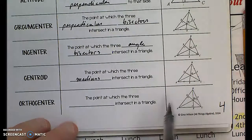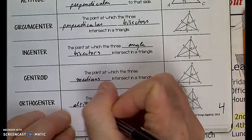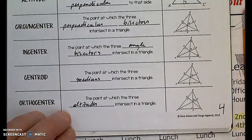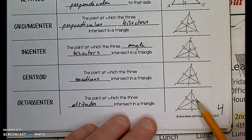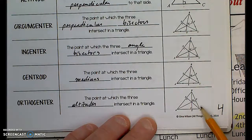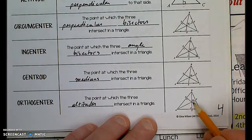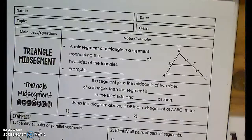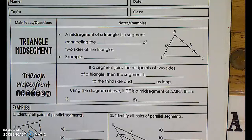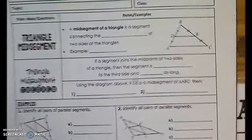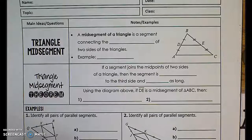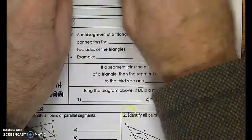Finally, the orthocenter is the point at which the three altitudes intersect in a triangle. The altitudes are drawn perpendicular to the opposite side — the segment BY is not necessarily congruent to YC; all that's stated is that the line is perpendicular to the opposite side. All three altitudes intersect at the orthocenter. Now let's go to the next page for the triangle mid-segment theorem — I'm going to start another video for that. Thank you.